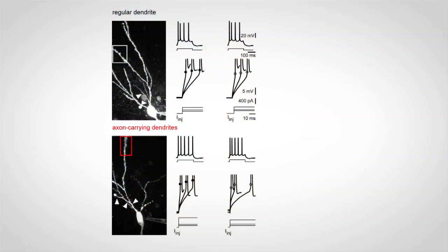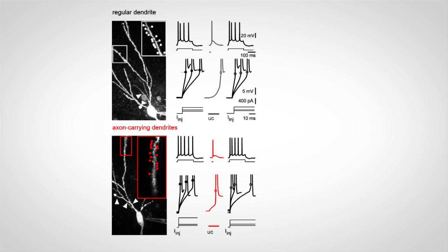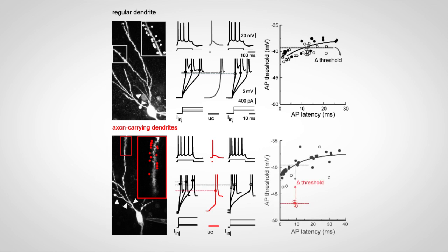We also wanted to find out if this atypical axon location affects action potential thresholds. To do this, we compared action potentials triggered by simple somatic current injection to action potentials elicited by glutamate uncaging on dendrites. Stimulation of regular dendrites generated action potentials with thresholds similar to somatic current injection. However, stimulating axon-carrying dendrites generated APs with hyperpolarized thresholds. The difference in action potential thresholds is then a functional correlate of this axodendritic structure we observed in a majority of CA1 pyramidal neurons.